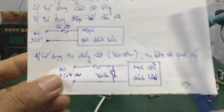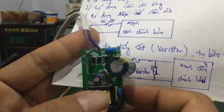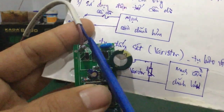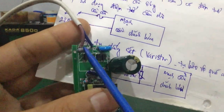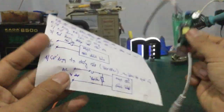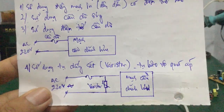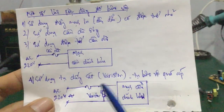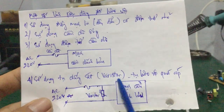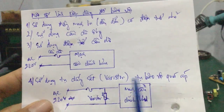Nhưng mà giả sử cái trường hợp này, nó sẽ cháy cái con điện trở này. Như vậy, cái con tụ chống sét hay con varistor này nó sẽ bảo vệ được cái mạch phía sau là mạch nguồn, hoặc là cái mạch cầu chỉnh lưu.